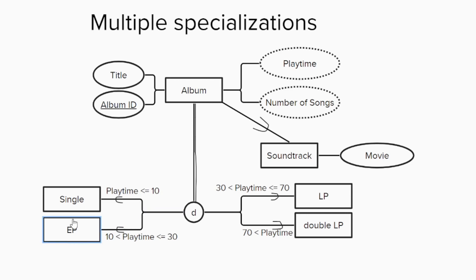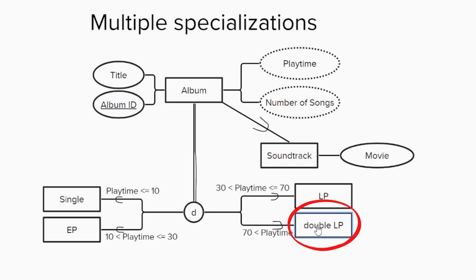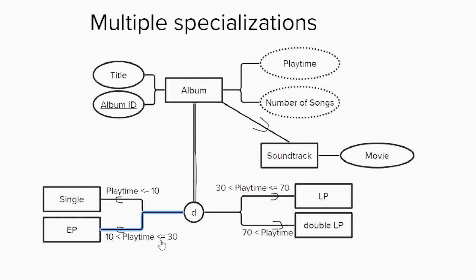Specifically, we'll define a single as an album with an overall length of 10 minutes or less. An EP, or extended play album, will be an album with a duration from 10 to 30 minutes. An LP, or long play album, will be between 30 and 70 minutes. And a double LP will be anything longer than that. These definitions all depend on the total playtime of the album, which is a derived attribute that can be calculated by adding up the durations of all songs on the album. This allows us to categorize each album into exactly one category, and the rules themselves are placed along the lines connecting to the specialization circle.